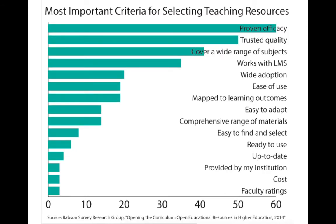The next factor was the important criteria for selecting teaching resources: proven efficacy — have they been used in other courses? Trusted quality, meaning has it been peer reviewed rigorously? Does it cover a wide range of subjects? Can it be integrated into a learning management system? And things that have become more important — ease of use mapped to learning outcomes — not just for OER materials but any textbooks.